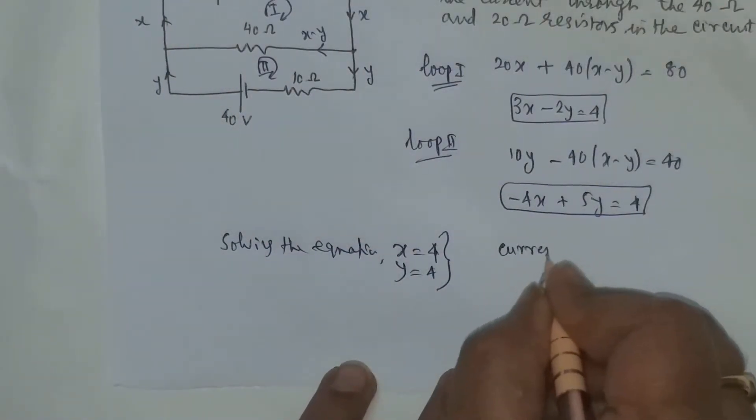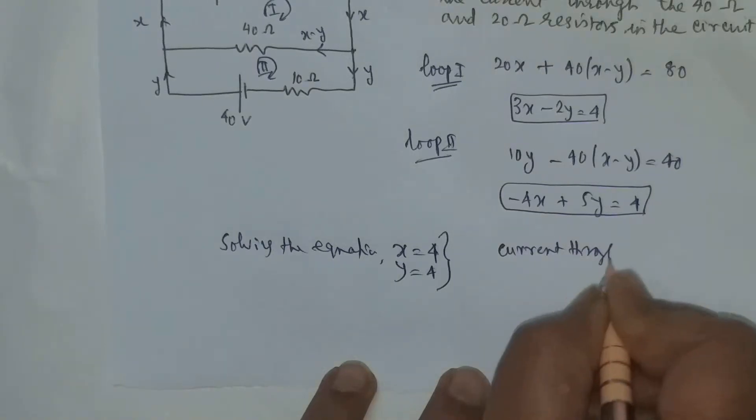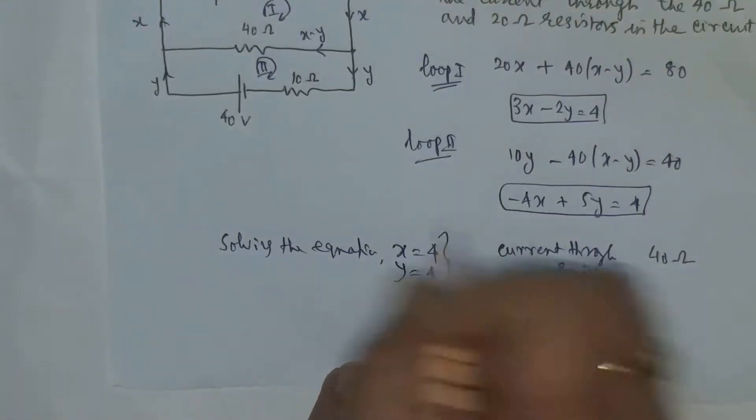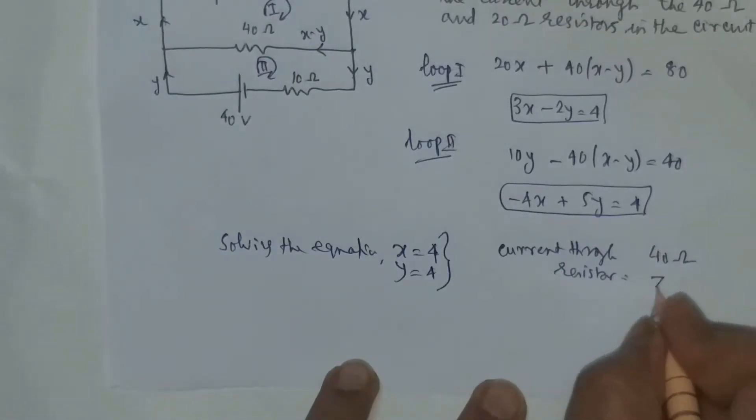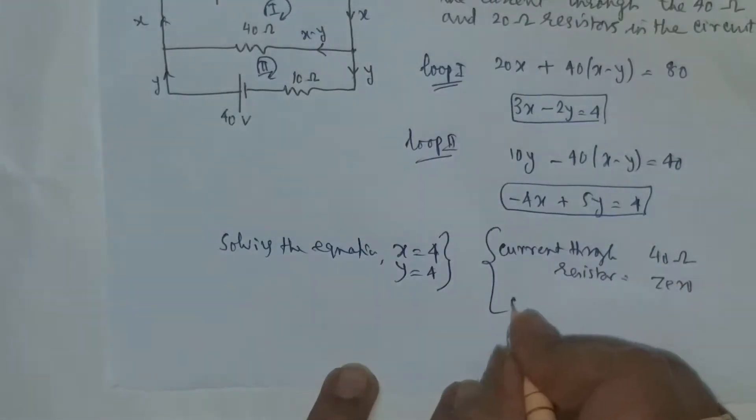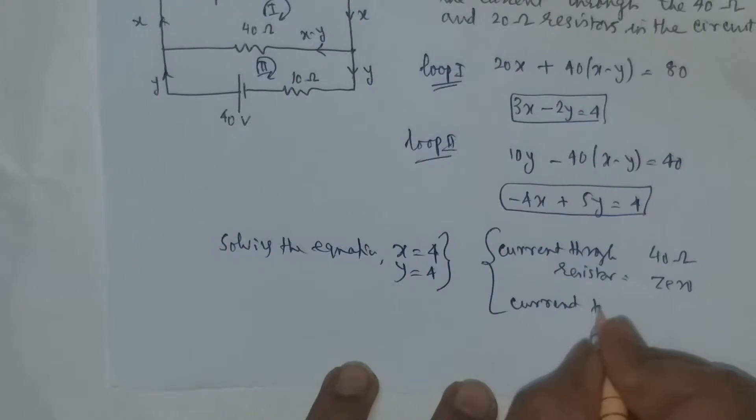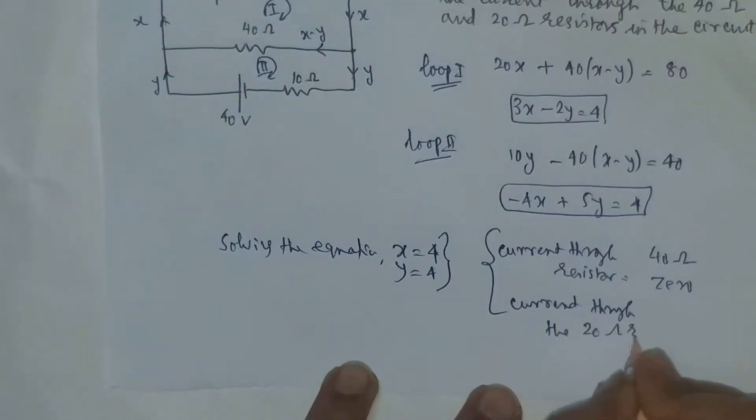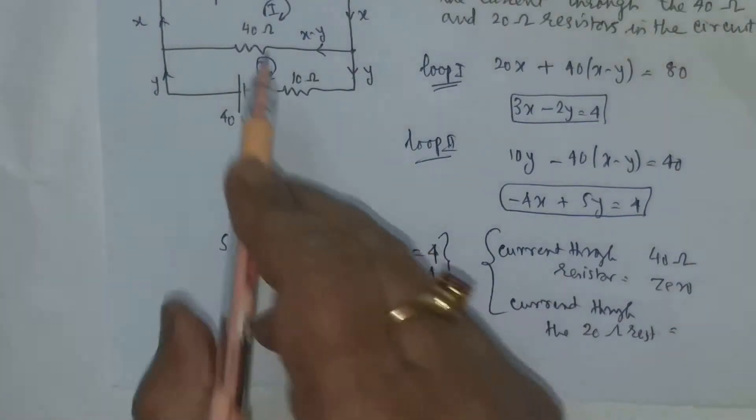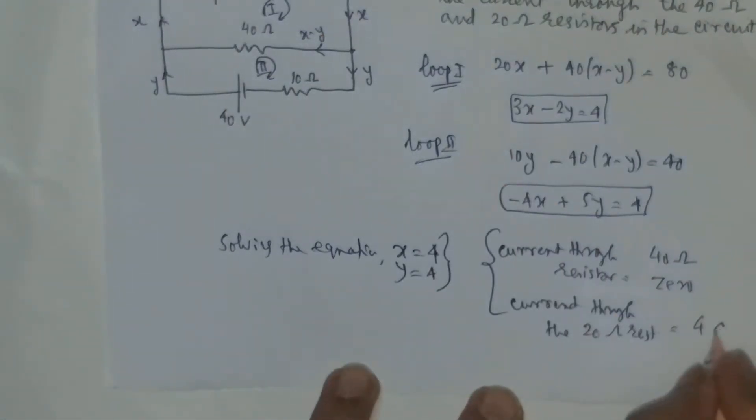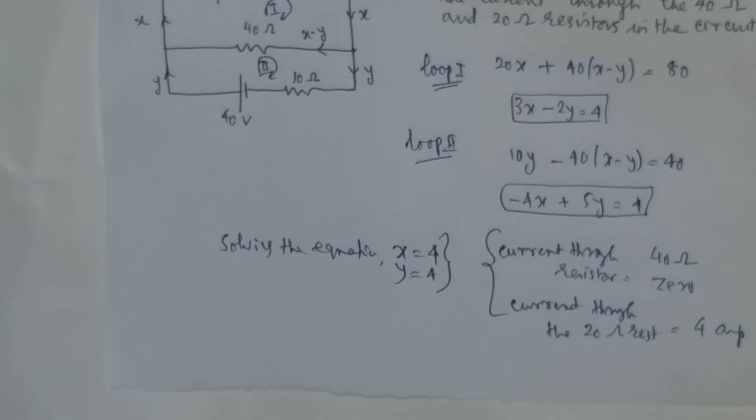The current through the 40 ohm resistor will be x minus y. It clearly states it is 0. Therefore, current through the 20 ohm resistor will be equal to the value of x, which is 4 ampere. So these are the results.